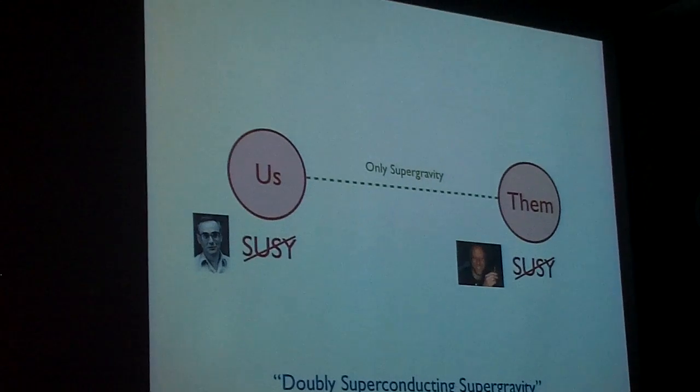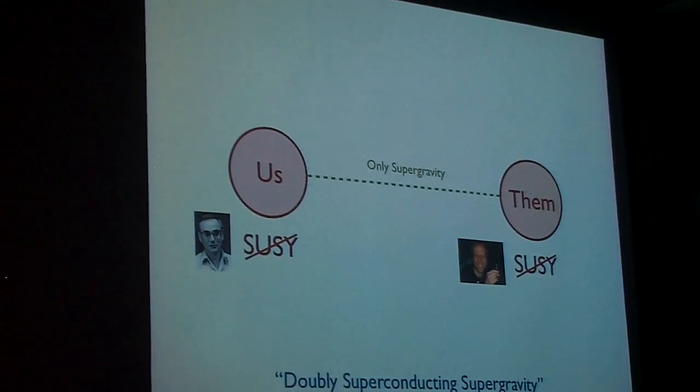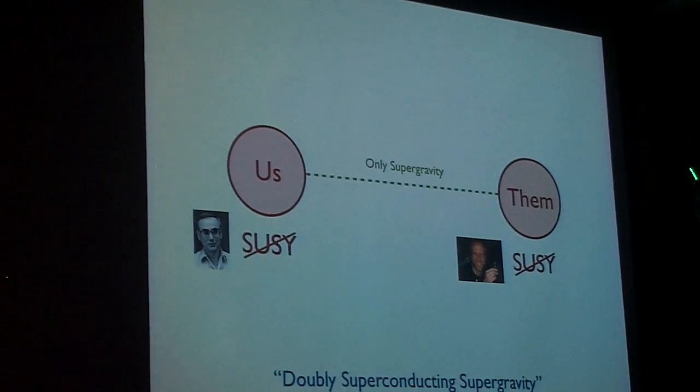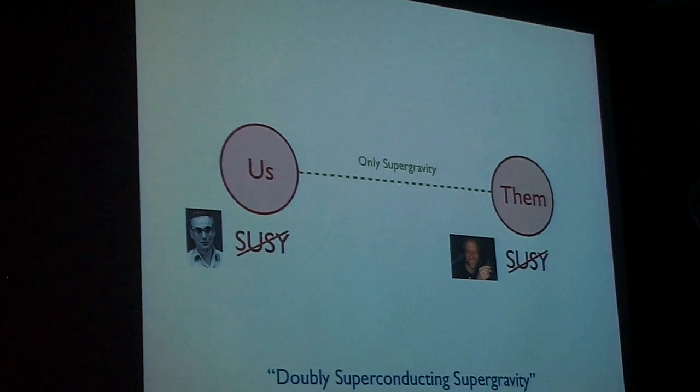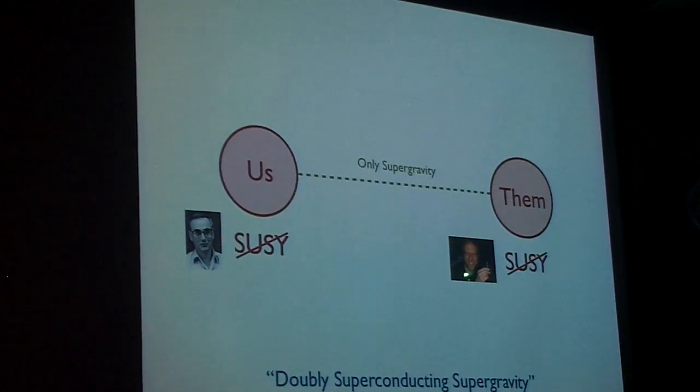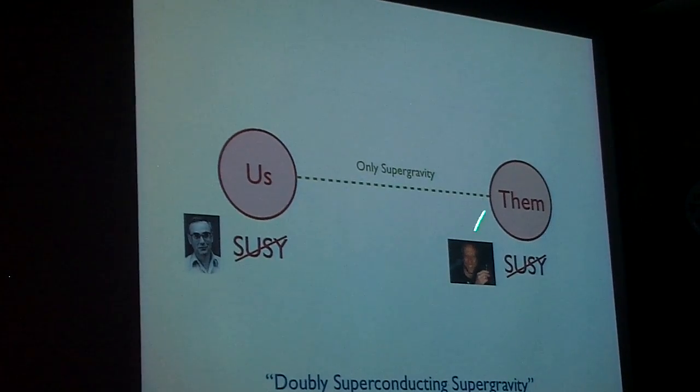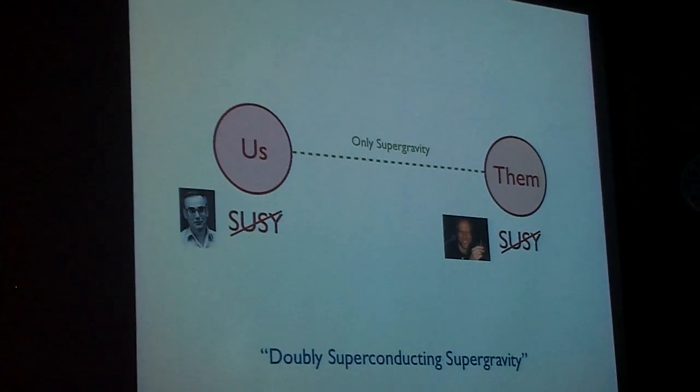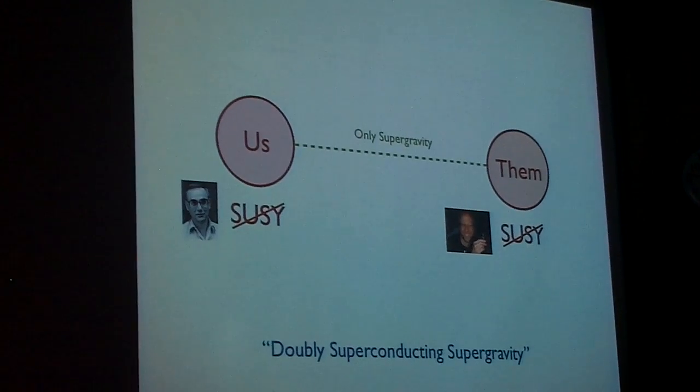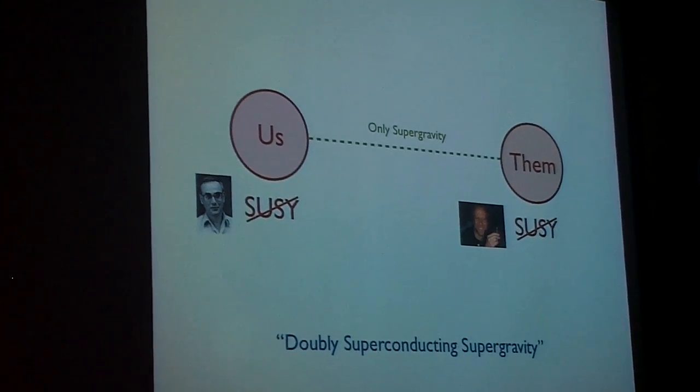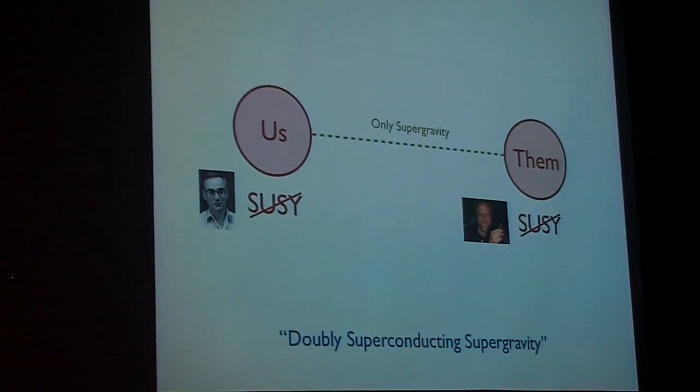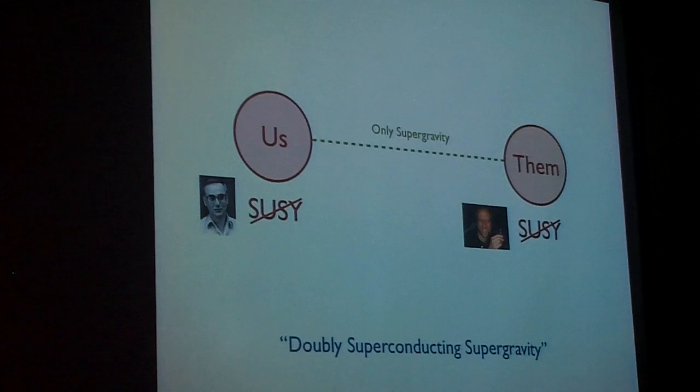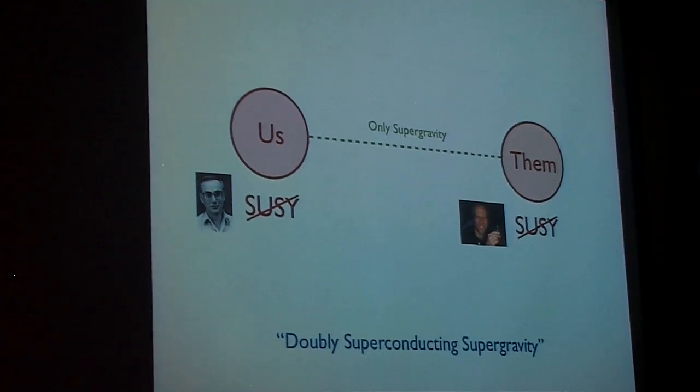So the picture you should have in your mind, here's us. We have our Goldstino. And over there, it's a parallel universe. In this case, the parallel universe is my new friend on Facebook, Jeffrey Goldstone. They have their own Goldstino. We have, in some sense, a doubly supersymmetry breaking supergravity. How would we know that this is what was going on? What test would we have?